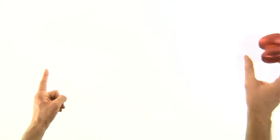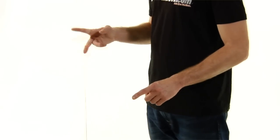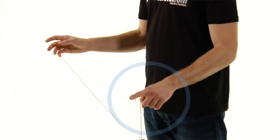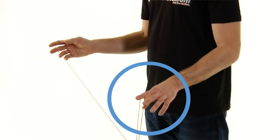To begin the trick, throw a breakaway and land the yoyo on a trapeze. Extend your non-throwhand middle finger so that the trapeze loop is trapped between your first two fingers.